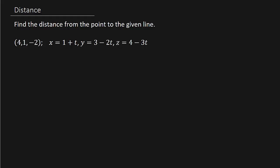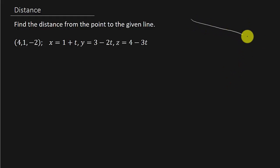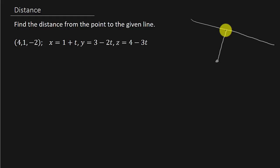Here's a way I found — I think it's pretty neat. Basically, we have this line and we've got this point, and we want to know this distance. If I can find a vector from this point to the line that's perpendicular, then all I need to do is find the magnitude of that vector.